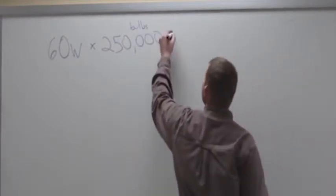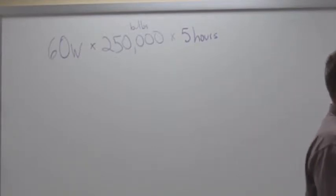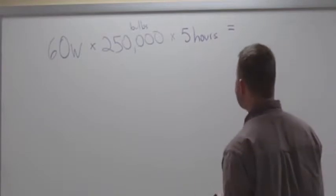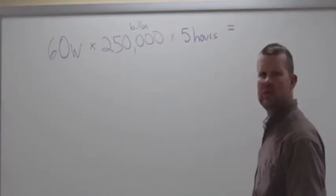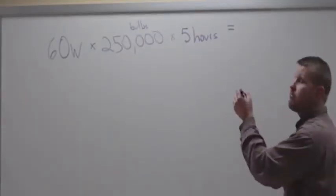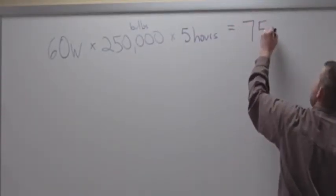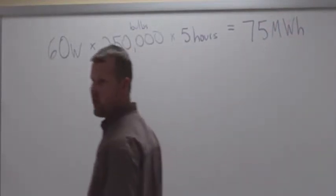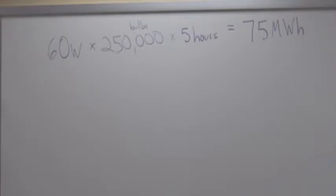I would agree. About how many watt-hours are we using? You see, I got the camera, you're going to have to bail me out again. 75 megawatt-hours. Okay, 75 megawatt-hours. So you took 60, multiplied by 250,000, and multiplied by 5 hours, and you came up with 75 megawatt-hours? I can live with that. That's a lot of megawatt-hours.